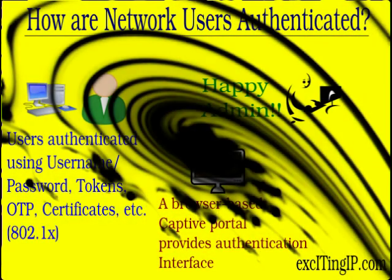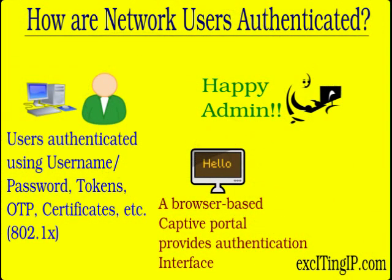When anyone tries to connect to the network, either by plugging in the network cable or by clicking on the available wireless SSIDs on their computer, the NAC application sends them a captive portal — a web-based input form. Here, they will be required to enter their username and password, which will be authenticated against stored credentials, and the user will be placed in the appropriate subnetwork with access privileges that are entitled to them.